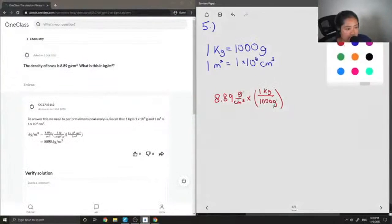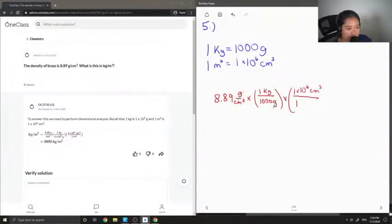And what also needs to cancel out are the centimeter cubed. So I'm going to put this at the top instead because the centimeter cubed in the original question is in the denominator. So in order to cancel it out, I need to put it as the numerator. And we're looking to convert it to meters cubed.